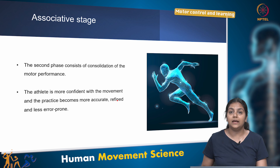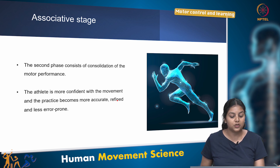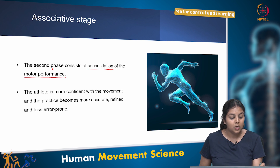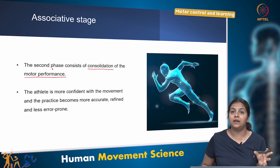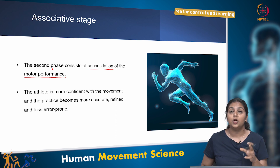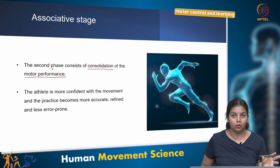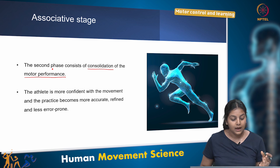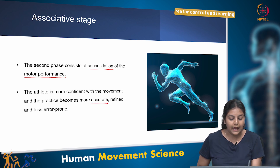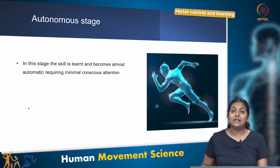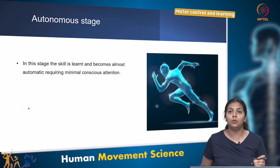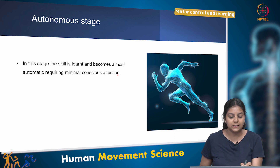The second stage is the associative stage, which involves consolidation of motor performance. By now the athlete has developed some mental mapping and feedback-based skill development. With practice, they become more confident, accurate, refined and less error-prone. The third and final stage is the autonomous stage, where the skill is already learned and becomes almost automatic, requiring minimal conscious attention.